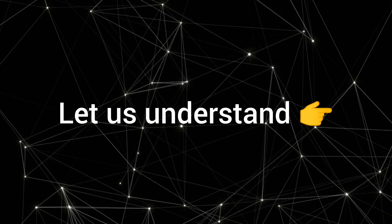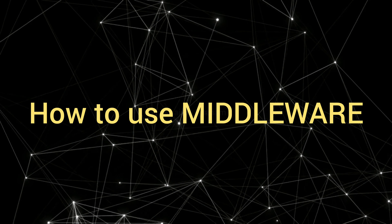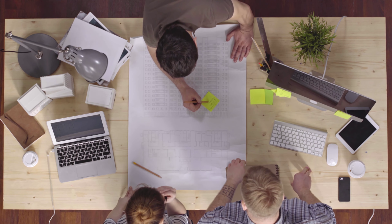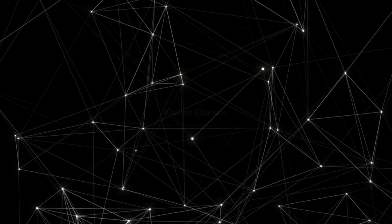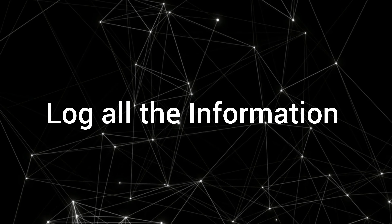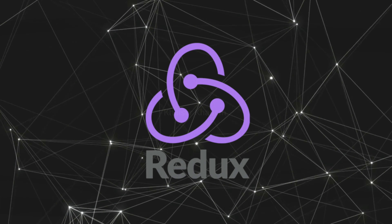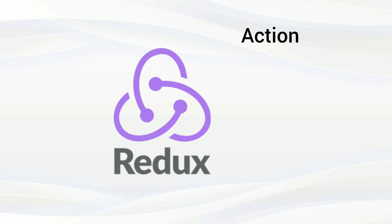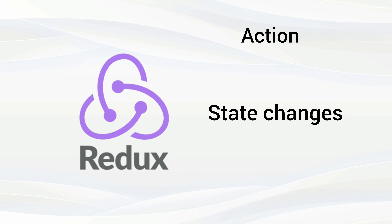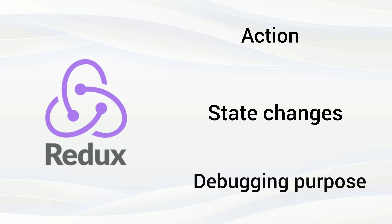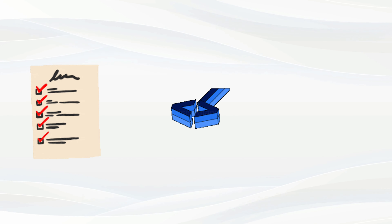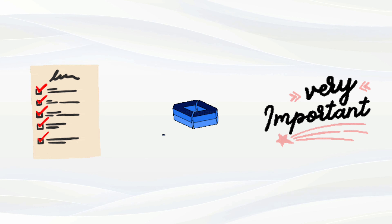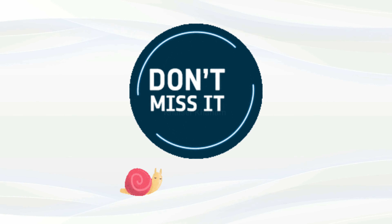Step by step, let us understand how to use middleware. In this, I will be showing you a simple middleware — that is logger middleware — using which we can log all the information related to our Redux application. Like we can log the actions and whatever state changes are done, that we can easily log for debugging purposes. I will be going very, very slow.